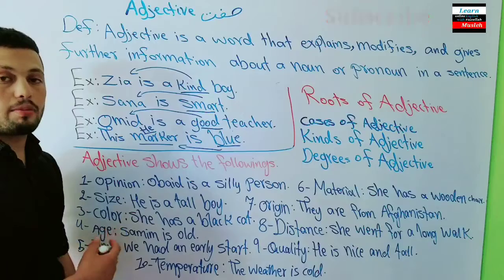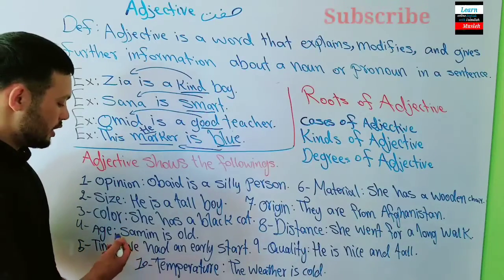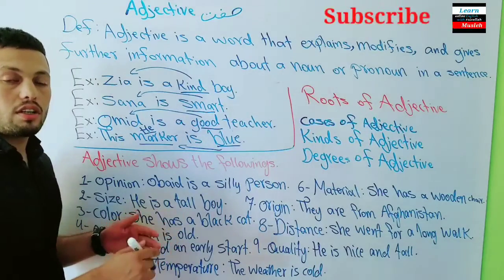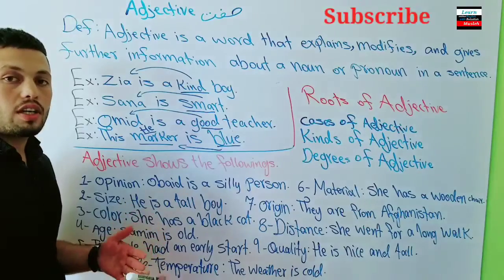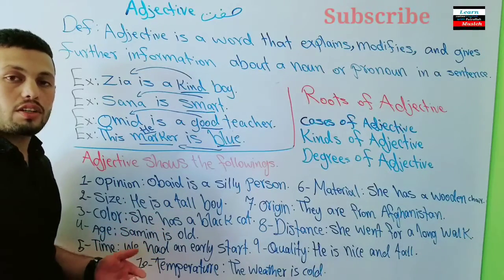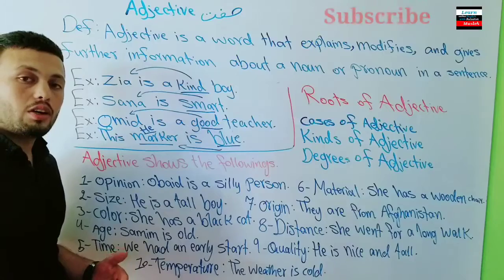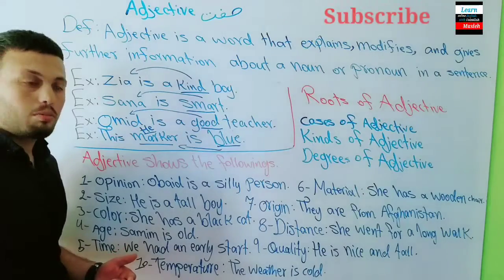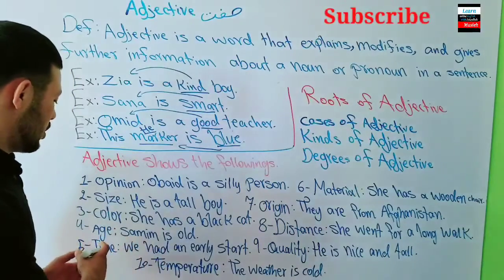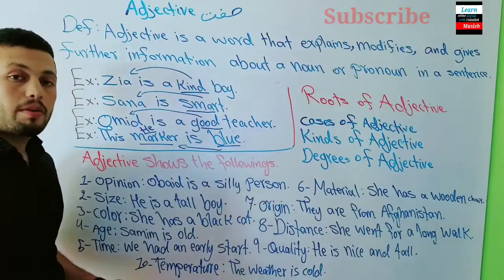Adjectives also show age — 'sin' in Dari. For example: 'Sam is old' or 'She is an old lady.' Here 'old' describes the age. You can also use 'young,' as in 'young lady,' which is also an age adjective.